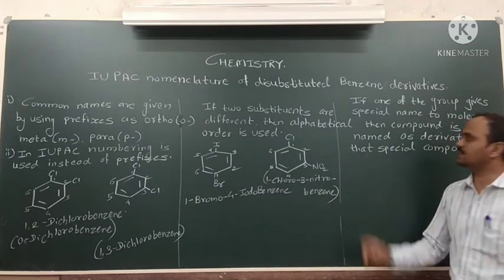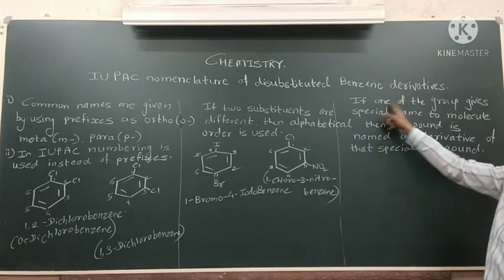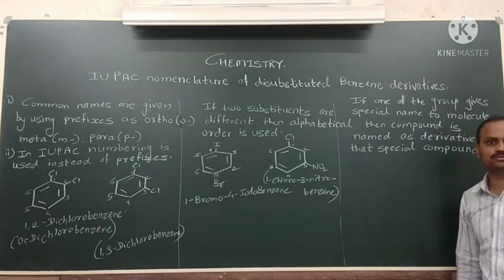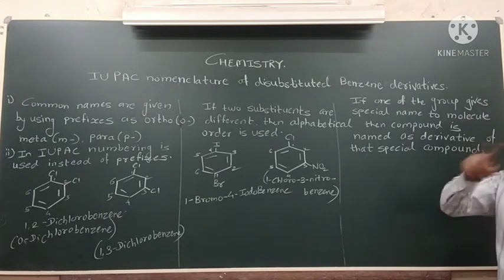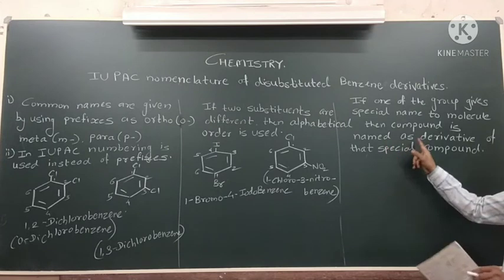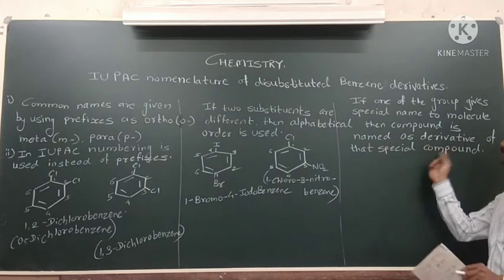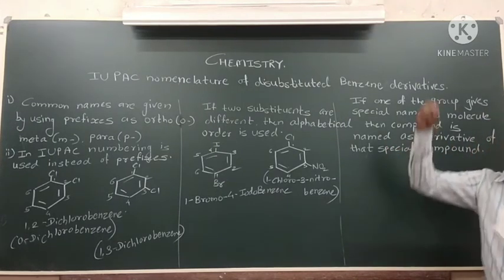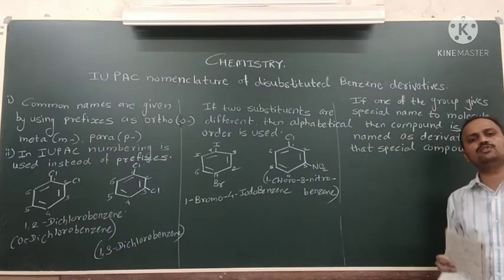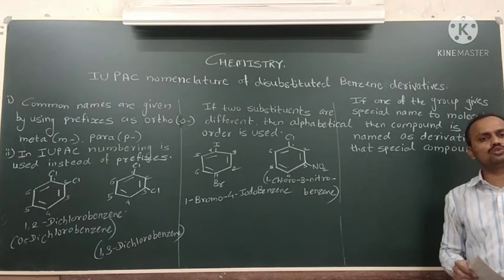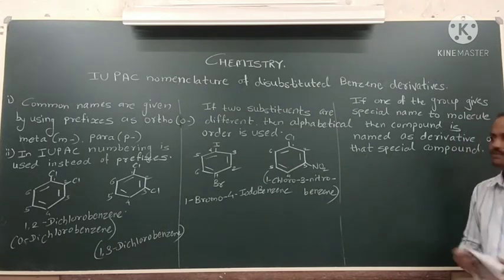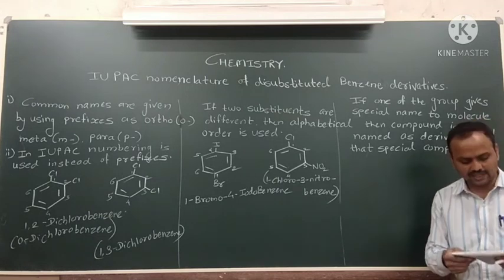The third and last category: if one of the groups gives a special name to the molecule, the compound is named as a derivative of that special compound. For example, if you have phenol and chlorine is attached, the name will be chlorophenol — specifically 2-chlorophenol or 1-chloro-3-chlorophenol accordingly.